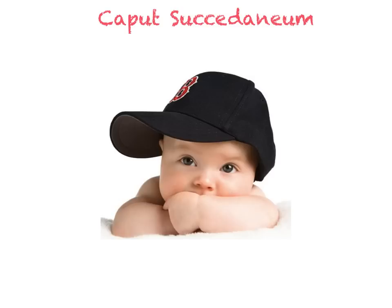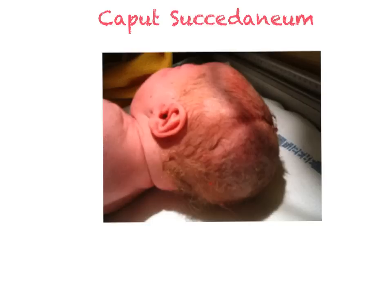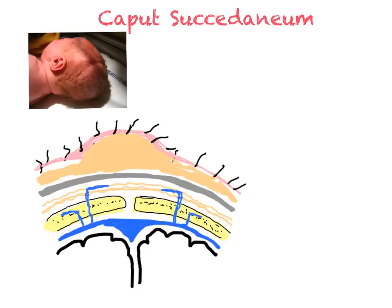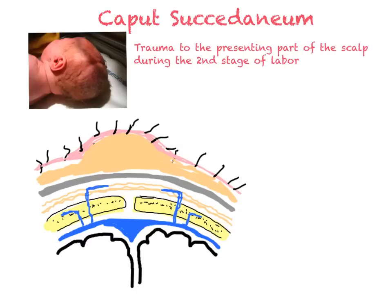The way to remember the characteristics of a caput is to visualize a baby wearing a cap. A caput covers all the suture lines and crosses suture lines — just like a cap, it crosses suture lines. A caput is caused by mechanical trauma of the presenting part of the scalp as it pushes through the narrow cervix. There is usually some associated skin bruising that may make a caput look like a hematoma, but it is not a hematoma.